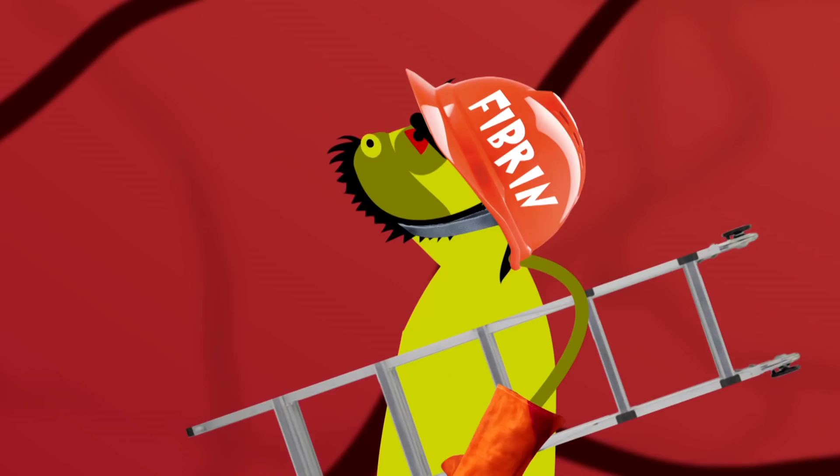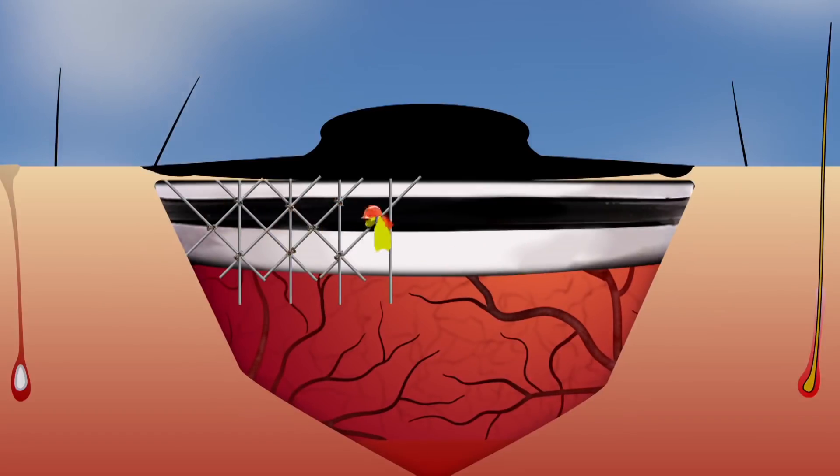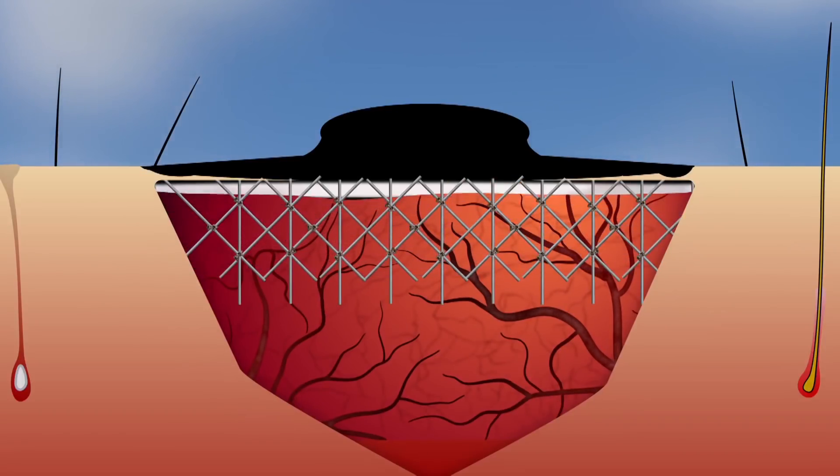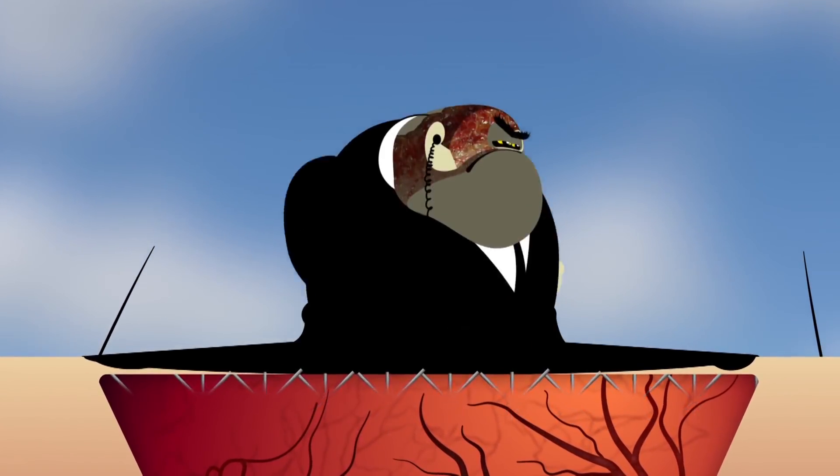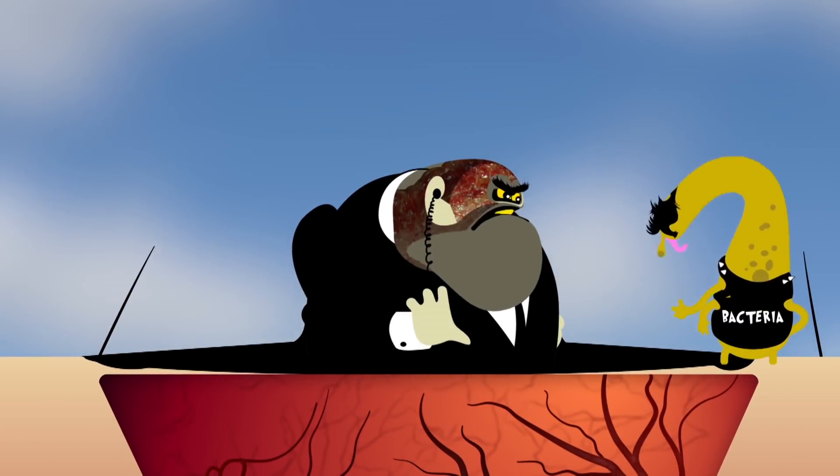Then, a protein called fibrin holds everything together with fibres, a bit like scaffolding. The clot dries out and goes hard, forming a scab to keep bacteria out like a bouncer. Sorry, mate, you're not on the list.